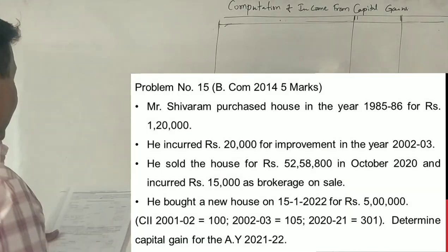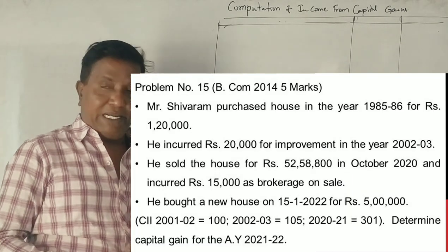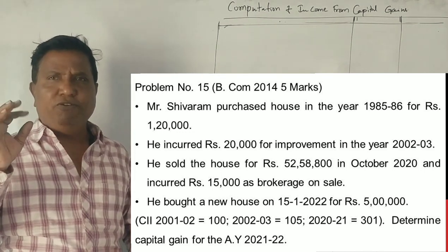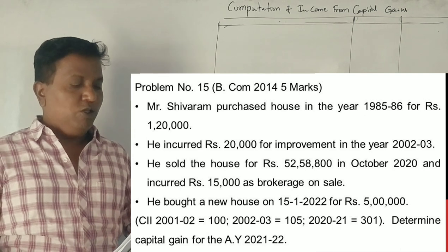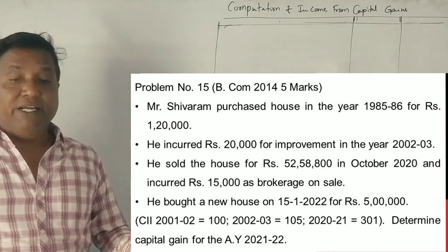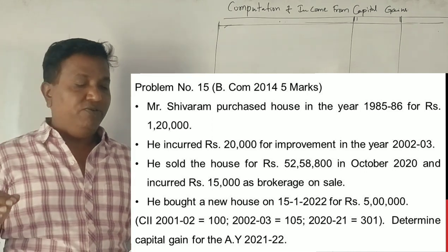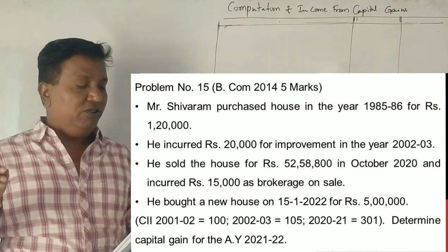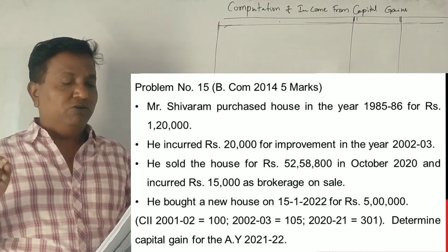This is income tax, capital gains. Problem number 15. Mr. Shivaram purchased a house in the year 1985-86 for Rs. 1,20,000. He incurred Rs. 20,000 for improvement in the year 2002-03.